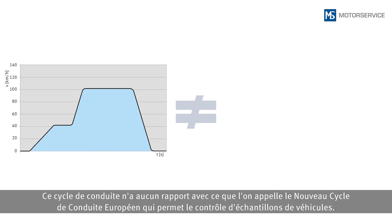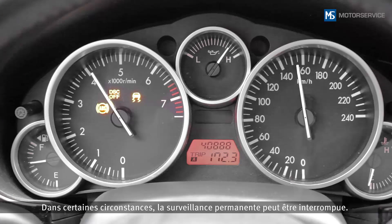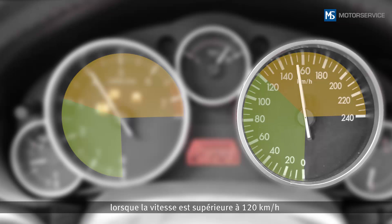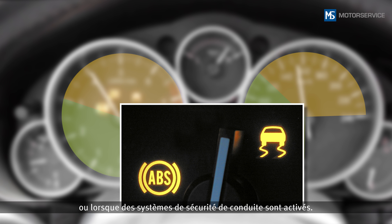This driving cycle has nothing to do with the so-called New European Driving Cycle used for vehicle prototype certification tests. Permanent monitoring can be interrupted under certain conditions — for example, at engine speeds of over 3000 rpm, at speeds of over 120 km/h, or when driving safety systems are activated.